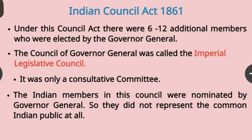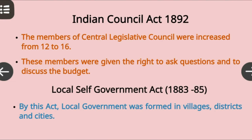Under the Indian Council Act 1861, there were 6 to 12 additional members who were elected by the Governor General. The Council of the Governor General was called the Imperial Legislative Council, and it was only a consultative committee. The Indian members in this Council were nominated by the Governor General, so they did not represent the common Indian public at all. Still, the Indian public was not satisfied with the reforms made in the Act of 1861.